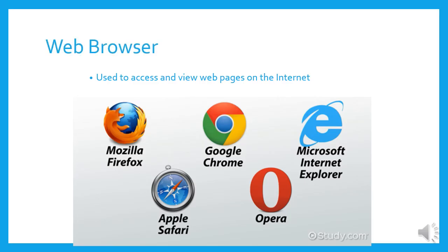And then the second-to-last type is the web browser. There are many different kinds of web browser. You are used to Microsoft Internet Explorer, or Edge as it is called now. Google Chrome is very popular. Mozilla Firefox, Apple Safari, and Opera are all different kinds of web browsers.